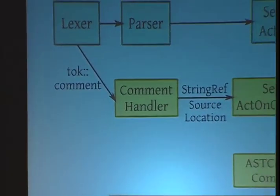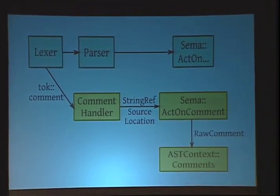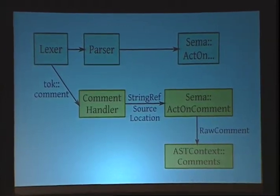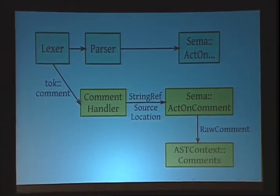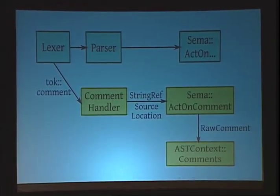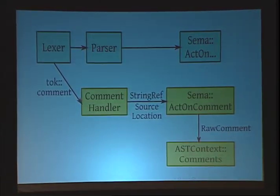How do we find raw comments and where do we keep them? On top, you can see the normal Clang pipeline consisting of the Lexer, Parser, and Semantic Analysis. We don't expose comment tokens to the parser; instead, we install a comment handler that extracts a comment as a string reference and source location, passing it to a separate semantic analysis method. We check if the comment looks like a documentation comment — if not, we don't process it further. If it does, we store it in the AST context in a separate vector sorted in source order.